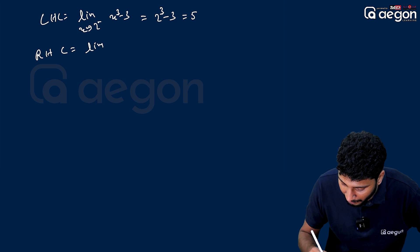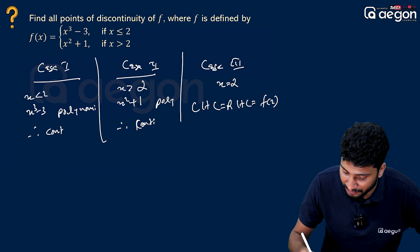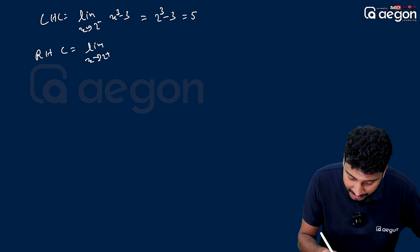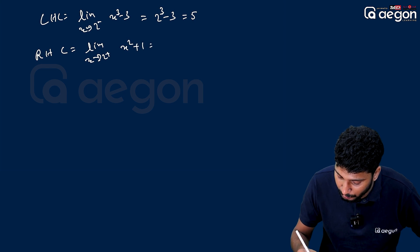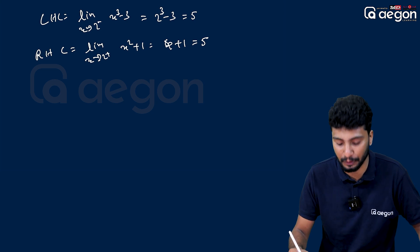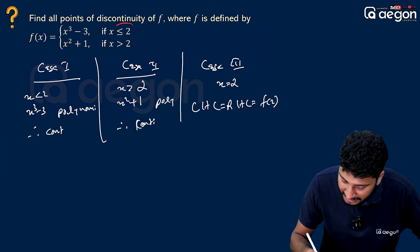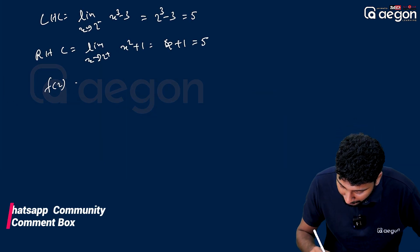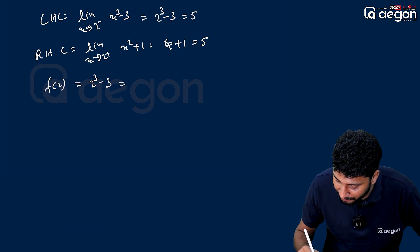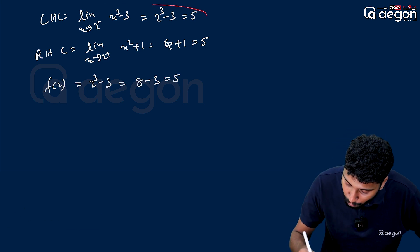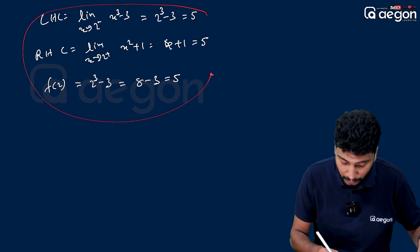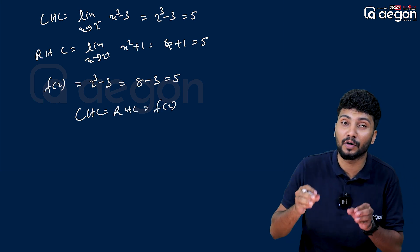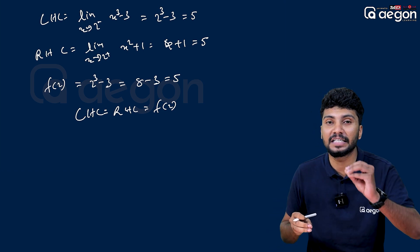RHL is equal to limit as x tends to 2 plus of f(x). For x greater than 2, the function is x² plus 1. So the limit gives 2² plus 1, which equals 5. And f(2) using x³ minus 3 gives 2³ minus 3 = 5. Therefore LHL equals RHL equals f(2), so the function is continuous — there is no point of discontinuity.